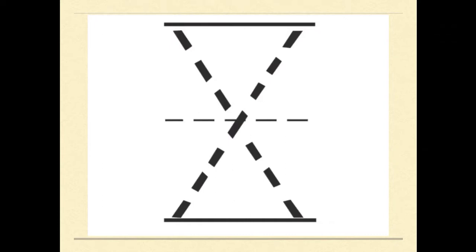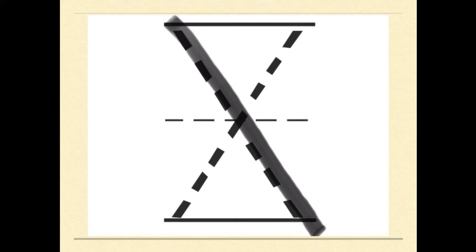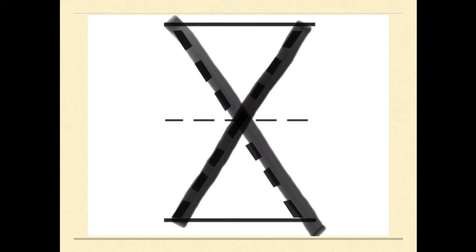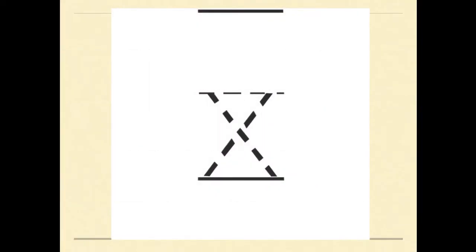Now, KG1, how are we going to trace letter X? Put your pencil, please, and trace the broken line, straight line, and go down to the right, then the other line, we go down to the left, and straight line. Excellent, KG1. This is the capital X. And now we are going to trace letter X also, KG1. The same way, we make a straight line, down to the right, and then we go down to the left. Excellent, KG1. Thank you.